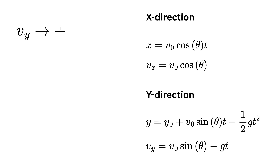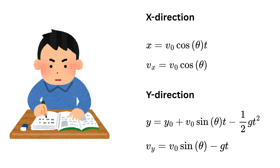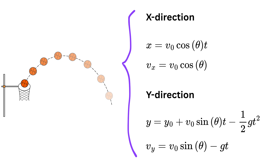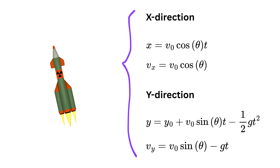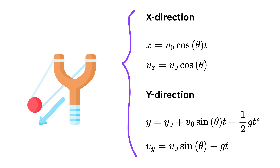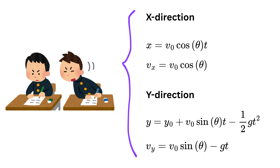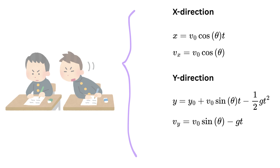We can solve any projectile motion question using just these four equations. Whether it's finding how far the projectile goes, how high it rises, how long it stays in the air, or what its speed is at any moment — these equations cover it all. Think of them as your cheat codes for solving any projectile motion question.